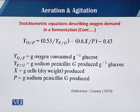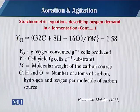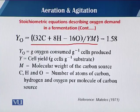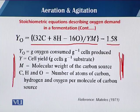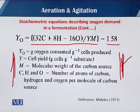The equation reported by Metallus 1971 is of a similar kind to those of the previous workers. Y₀ is equal to (32C + 8H − 16O) divided by (Y/m − 1.58), where Y₀ is the grams of oxygen consumed per gram of cell produced, Y is the cell yield, m is the molecular weight of the carbon source, and C, H, O are the number of atoms of carbon, hydrogen, and oxygen respectively.